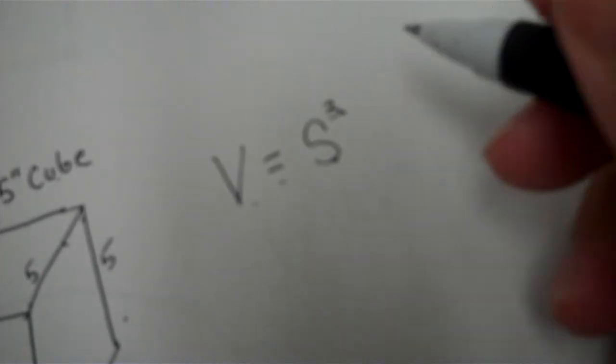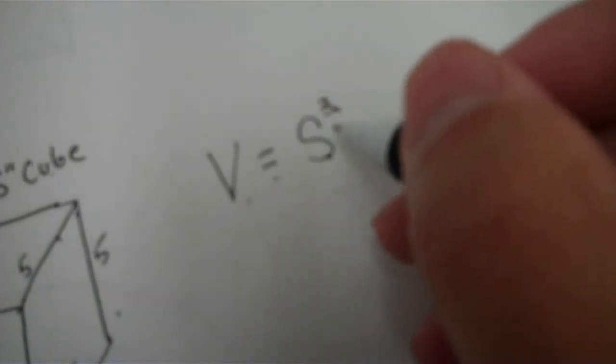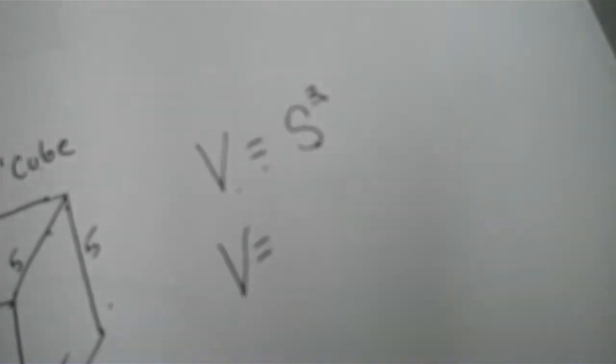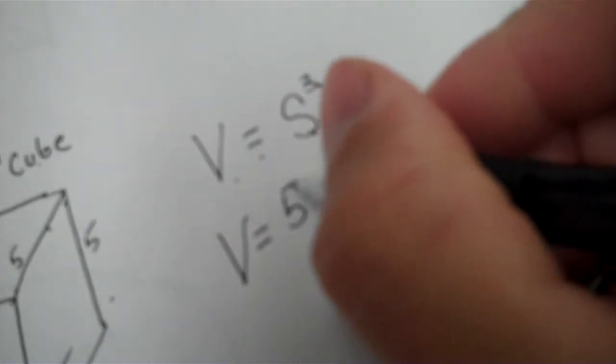So all you're doing is really doing the same thing we did in the rectangle. You're doing length times width times height, but just a little bit easier. This is an exponent, so you get volume equals the side, which was five, five inches.